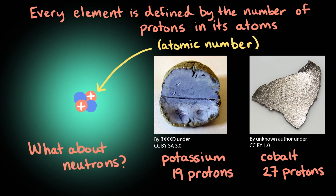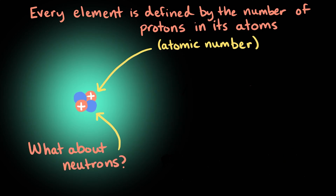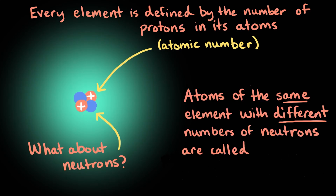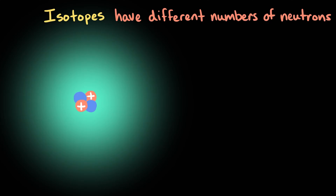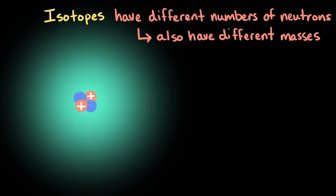But what about neutrons? Well, an element doesn't always have the same number of neutrons in its atoms. Atoms of the same element with different numbers of neutrons are called isotopes. Because isotopes of an element have different numbers of neutrons, those isotopes also have different masses.